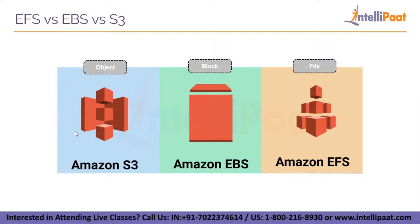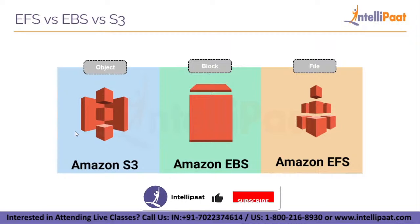Amazon Elastic Block Storage (EBS) is a block-level storage service for use with Amazon EC2. It can deliver performance for workloads that require the lowest latency access to data from a single EC2 instance. Amazon Simple Storage Service (S3) is an object storage service that makes data available through an internet API that can be accessed from anywhere.